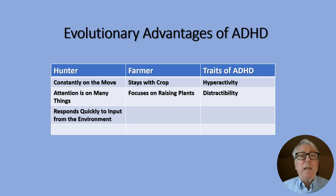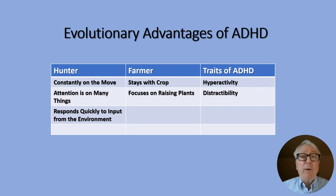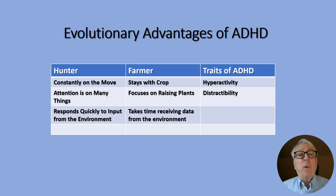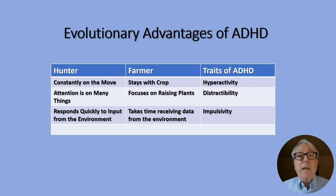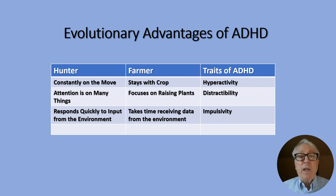Finally, the hunter needs to respond quickly to any input he receives from the environment. He hears the sound of a mountain lion and if he doesn't react quickly — by running to safety or by advancing on the animal — then he's toast. The hunter who is able to respond quickly has a clear advantage and this trait is likely to be preserved and handed down to future generations. The farmer, on the other hand, takes his time to record data: weather patterns, precipitation amounts, growth of plants, and other information to better help him in raising crops or tending to his herds. The ability of the hunter to respond quickly to input from the environment, which was an advantage at that time, is now considered a warning sign or red flag indicating ADHD. We call it impulsivity.